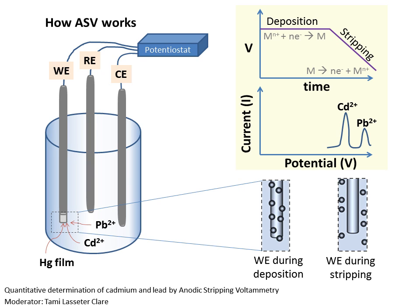The potential change can quantitatively tell you how much of each type of metal there was in your sample. This is a three-electrode measurement system, where there is a working electrode, reference electrode, and counter electrode, connected to a potentiostat that controls the potential or voltage applied to the working electrode. The working and reference electrodes are used to define a potential in the cell, and the goal is to keep the well-defined potential on the working electrode versus the reference electrode, and only allow the current to flow to the counter electrode.